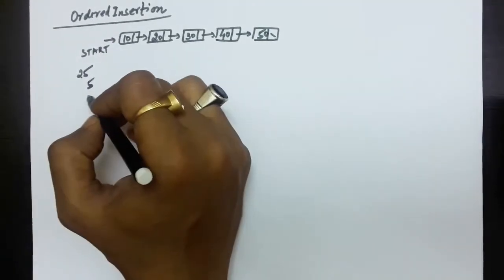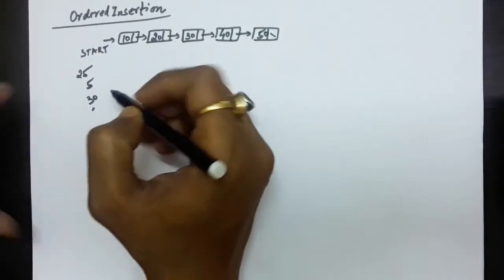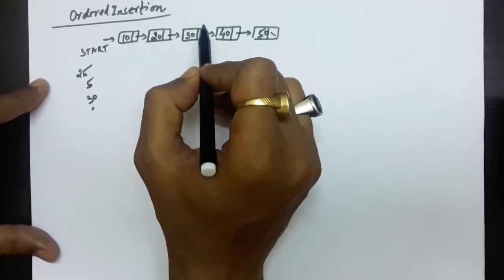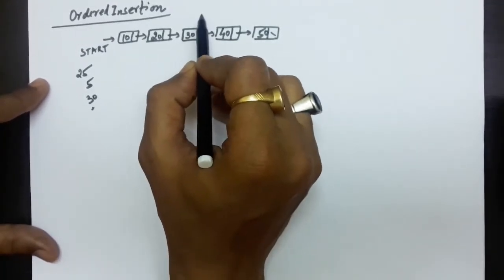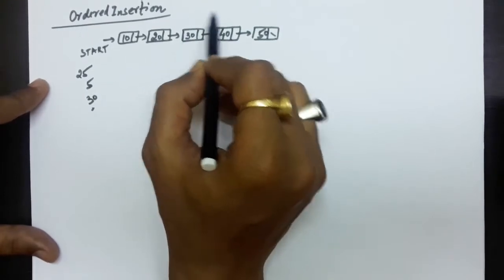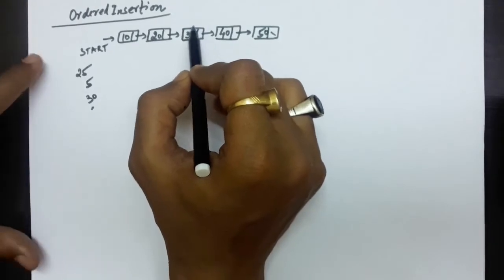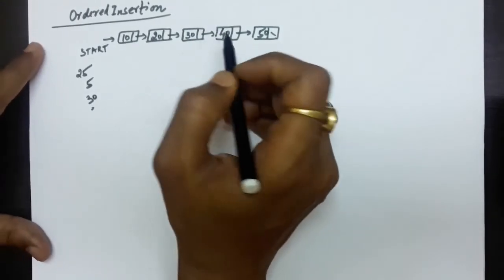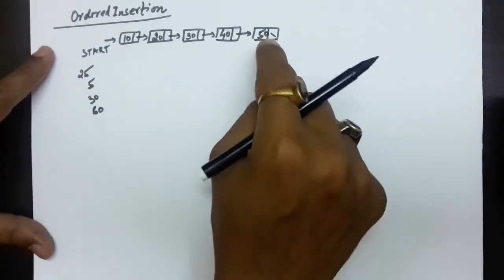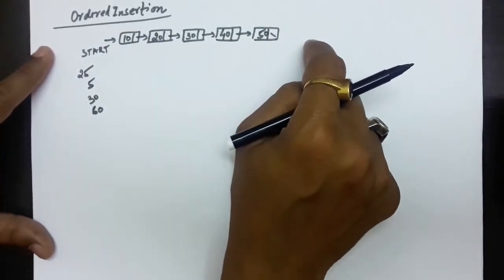Now, let's say we have to insert 30. Since 30 is already there in the linked list, this new 30 will be inserted after the existing 30. If you have to insert 60, it will be inserted after 50.